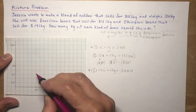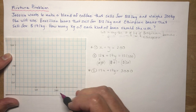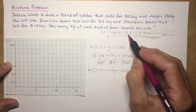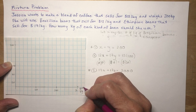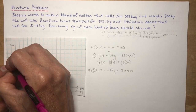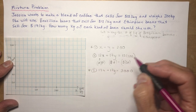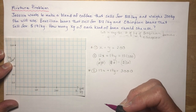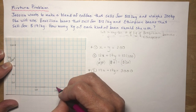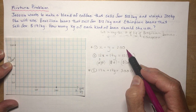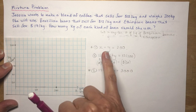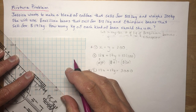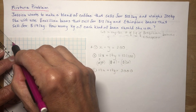Now I want to graph these to figure out where they intersect, which will tell me how many kilos of each. On the x-axis is kilograms of Brazilian beans, and the y-axis is kilograms of Ethiopian beans. For the first equation x + y = 200, the x-intercept is 200 and the y-intercept is 200. That's sufficient to draw the line. This is the line x + y = 200.